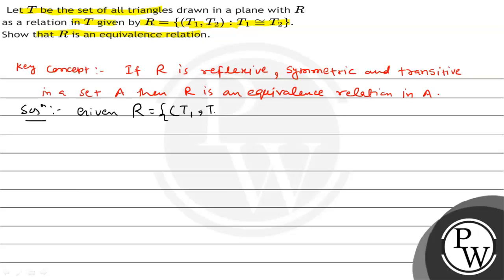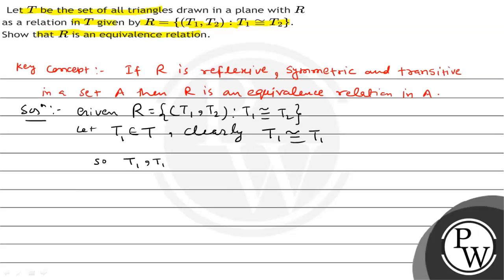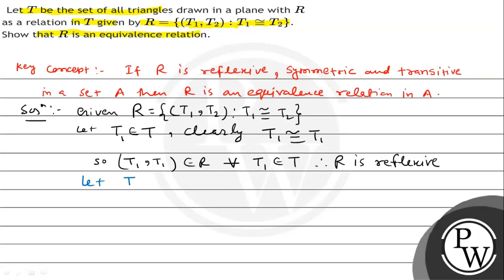Let t1 belong to T. Clearly, t1 represents a triangle. Any triangle is congruent to itself, so t1 is congruent to t1. Therefore (t1, t1) belongs to R for all t1 belonging to T. Therefore R is reflexive.